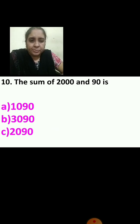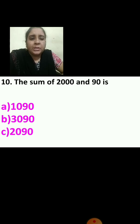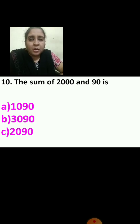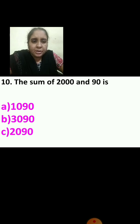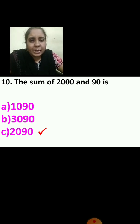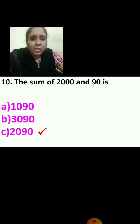Now the 10th question: the sum of 2,000 and 90 is dash. Sum means you have to add, right? Write 2,000 above and 90 below, arrange properly, and add both numbers. The correct answer is 2,090.